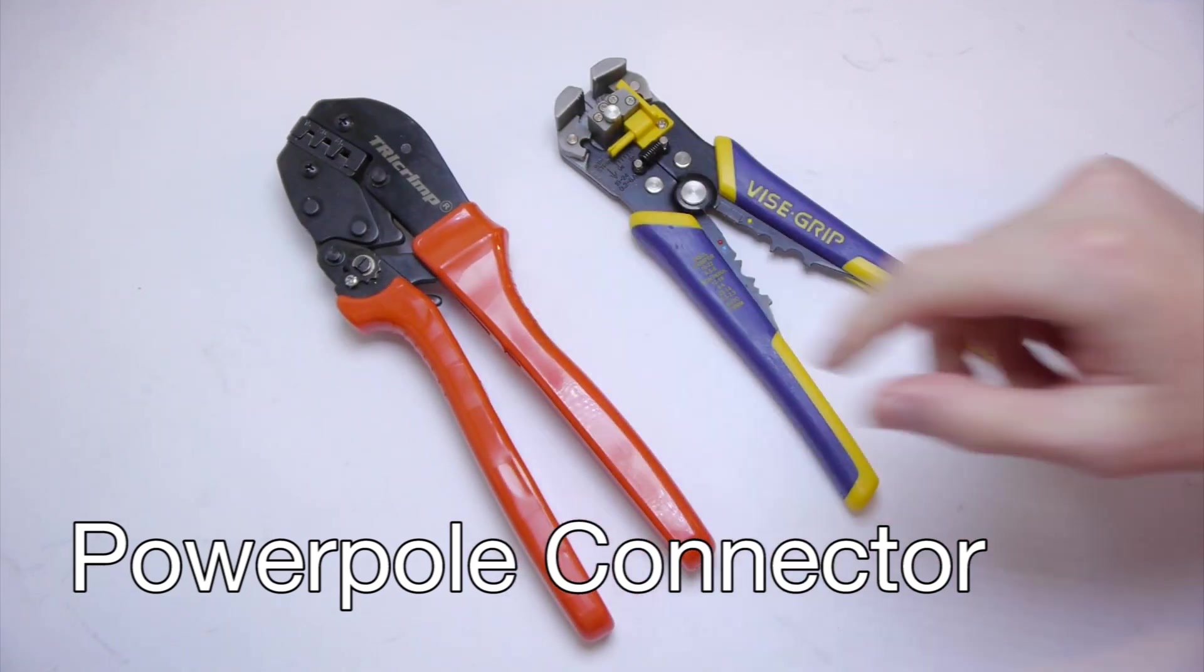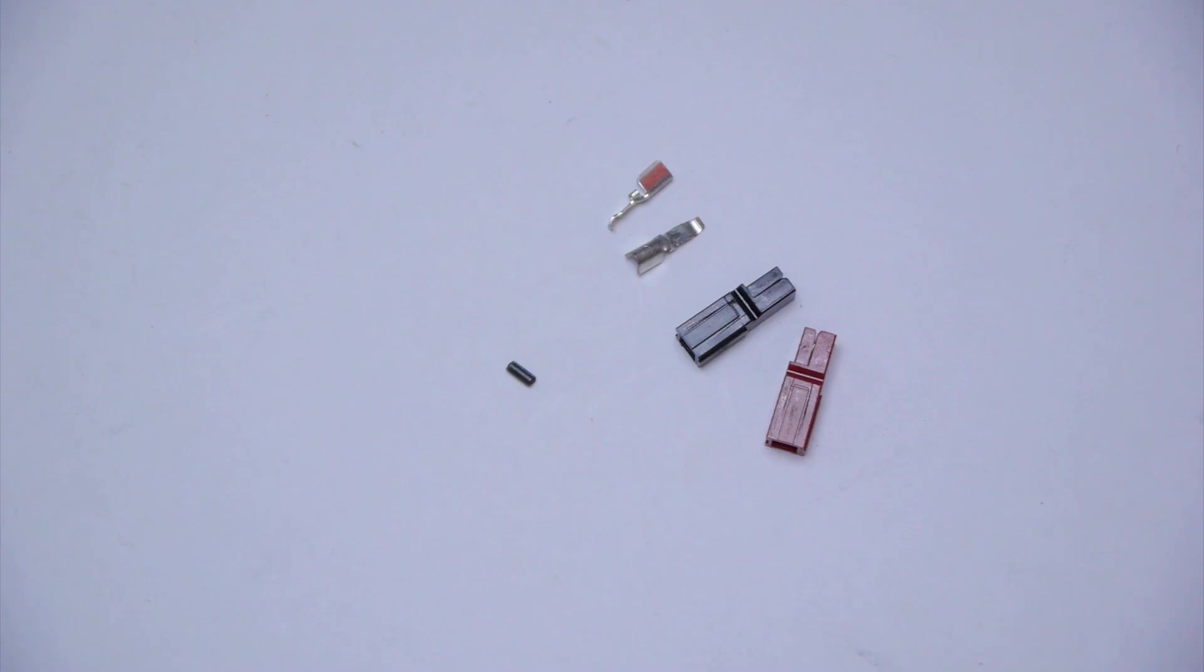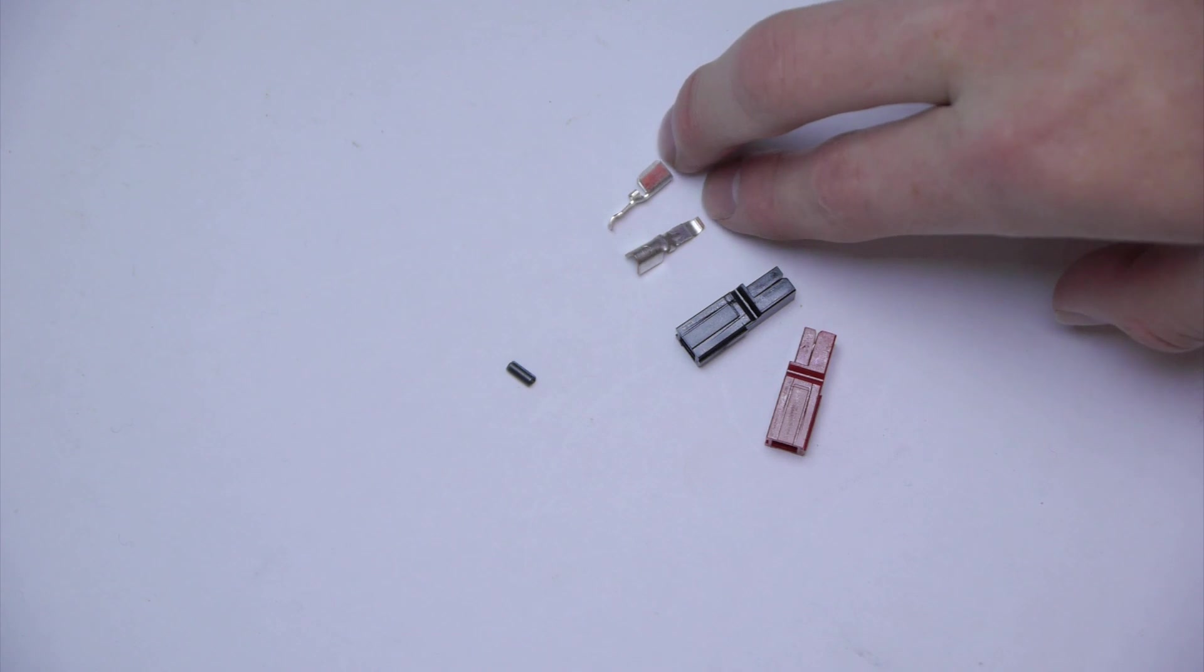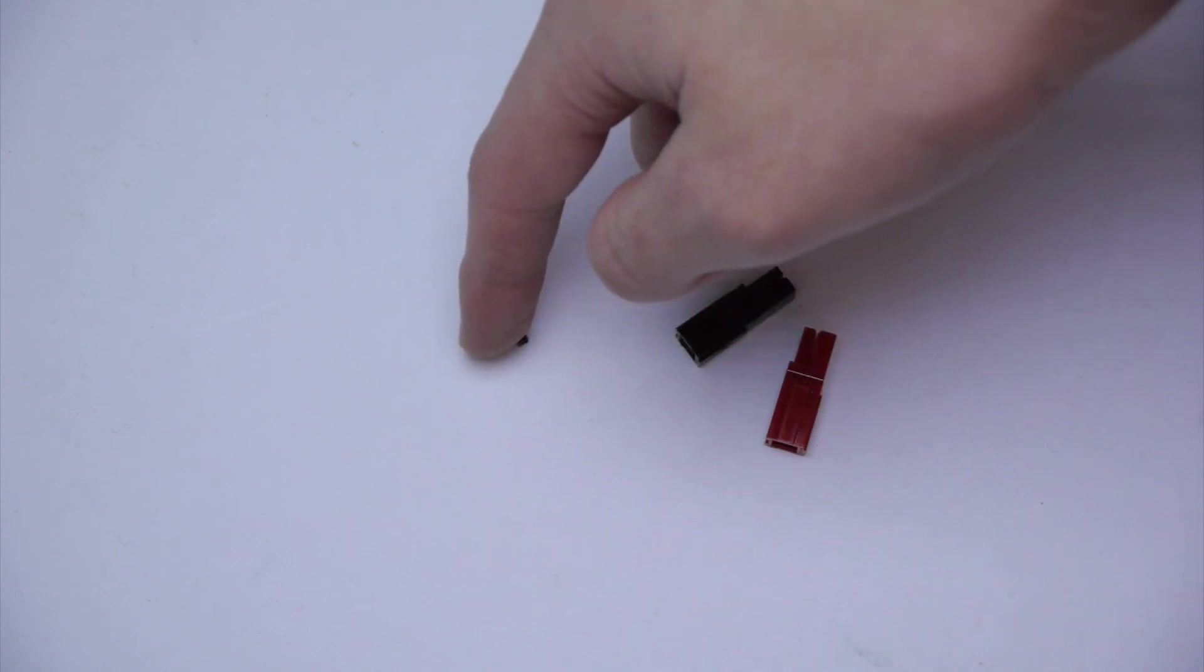Now, we'll crimp some power pole connectors. To crimp a power pole connector, you need the following parts: black and red housing, the two parts you crimp, and the locking pin.